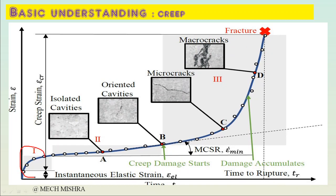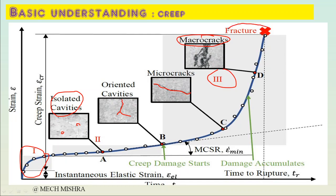In the first (primary) stage, void formation begins at the microstructure level. In the secondary stage, isolated cavities form and then get oriented — they become aligned and connected. In the third stage, these appear as micro-cracks, which enlarge and become macro-cracks, ultimately leading to fracture. These are the three stages of creep damage.